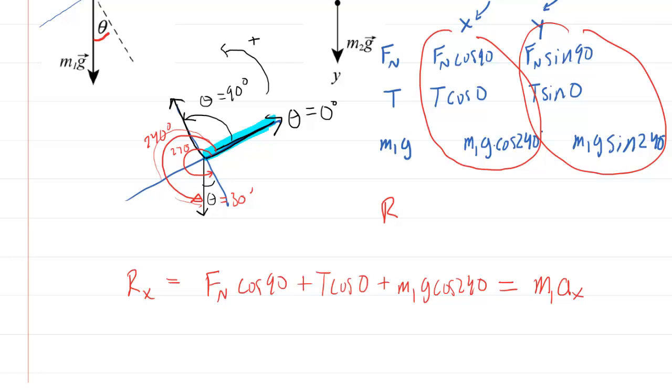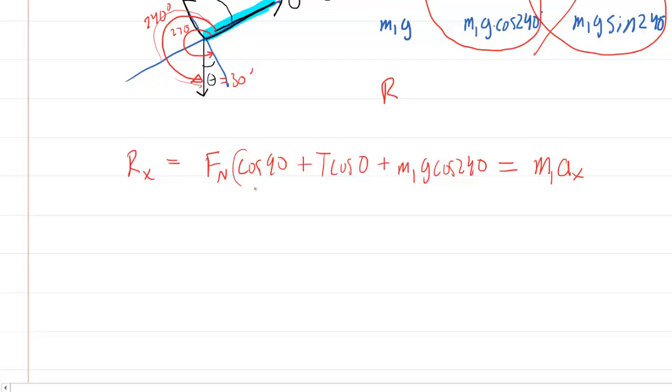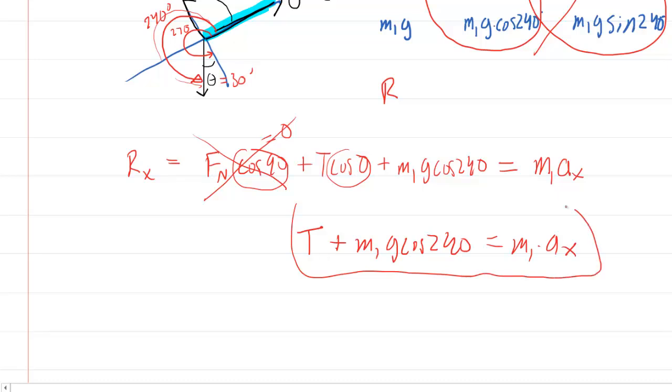And Newton told us that we take the sum of those forces and we set that equal to the mass times the acceleration in that direction, so in this case, the x-direction. Now, we actually could do the same thing in the y-direction, but it turns out we won't be needing that. And the reason for that is because the block isn't accelerating in our y-direction. So for now, we're going to ignore that. It turns out we won't need that information. Let's clean this equation up just a little bit. We might know that the cosine of 90 degrees is 0, so this actually drops out of our equation. We also might know the cosine of 0 is 1. So this simplifies to T plus M1g cos of 240 equals M1 times the acceleration in the x-direction. So this is an equation we're going to want to hang on to.